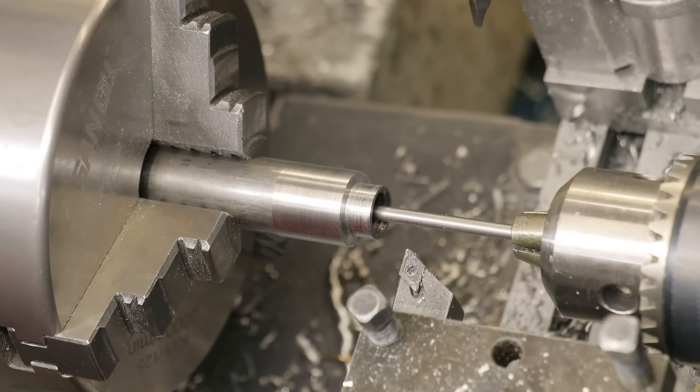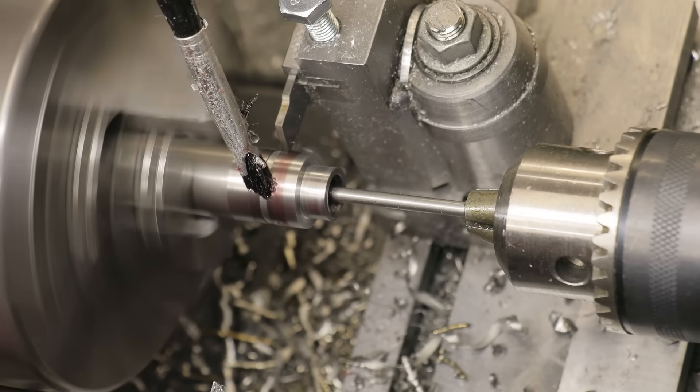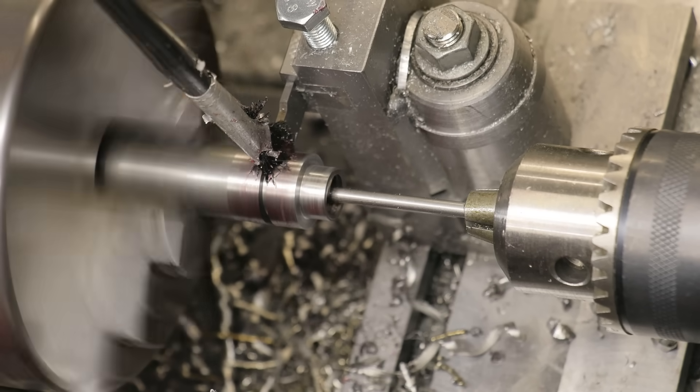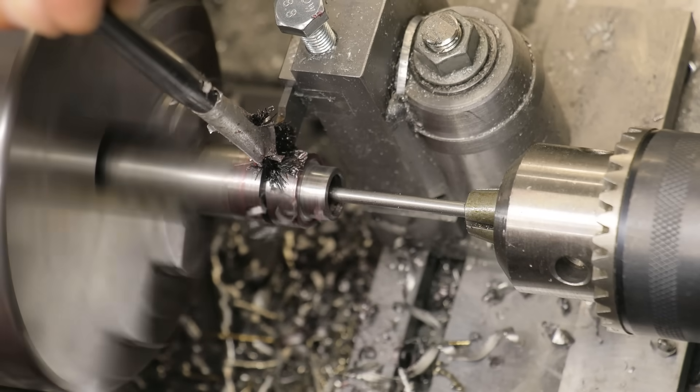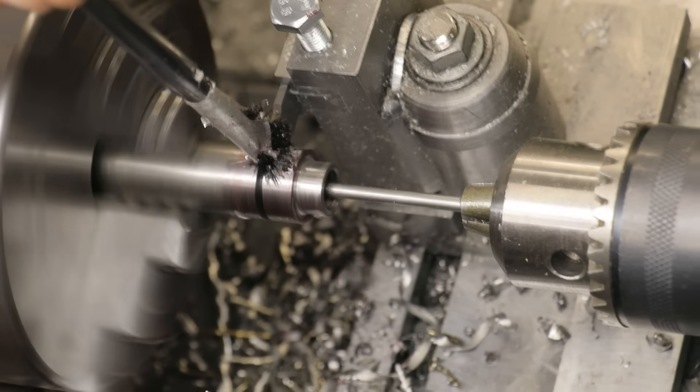And then finally, I'll get the part parted off. Now the exact length that you want may vary machine to machine. All we're really trying to avoid here is for the top of the Morse taper of your tooling bottoming out on that flange. I cut mine a little bit too long and you'll see what that looks like in a minute.